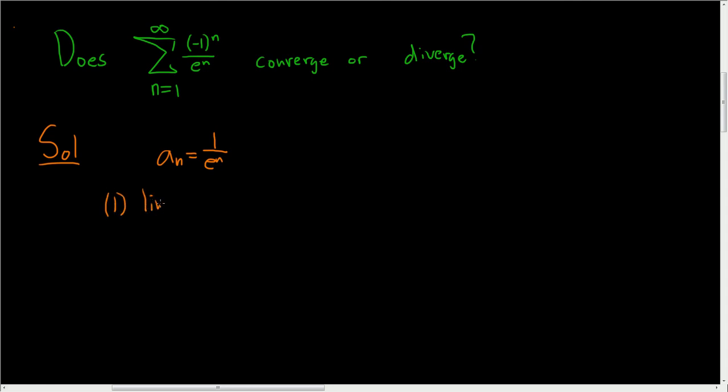The first is we have to make sure that the limit as n approaches infinity of a sub n is 0. So this is 1 over e to the n, and this indeed is 0. Because as n gets really, really big, e to the n gets really big as well, and so this limit approaches 0.